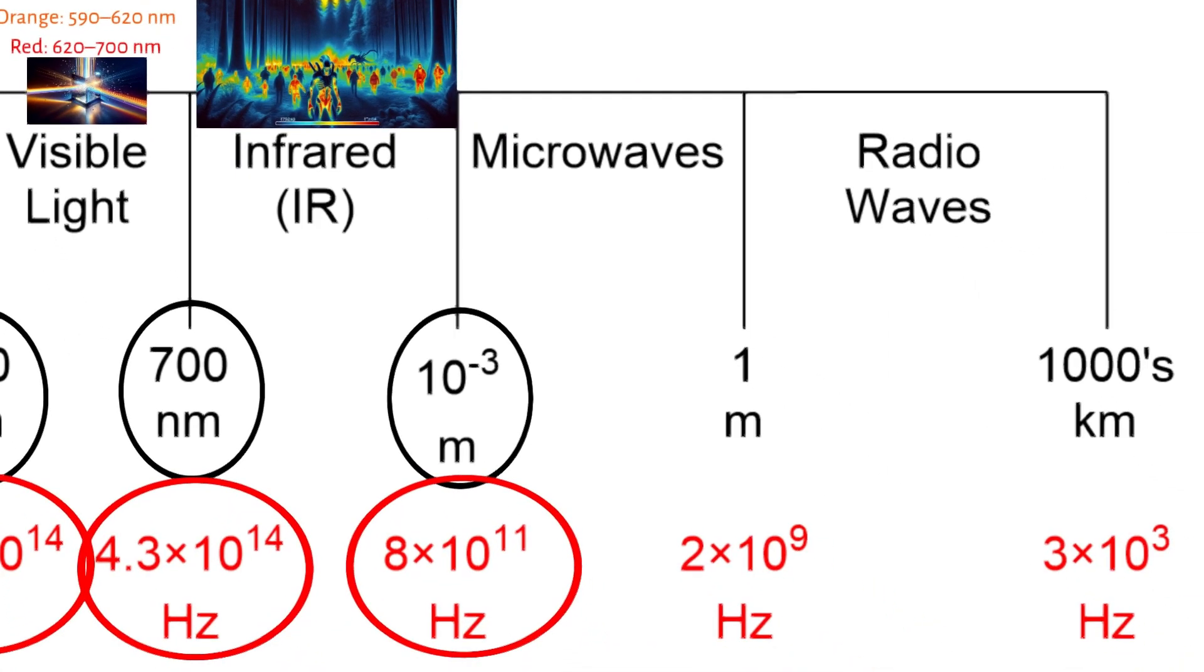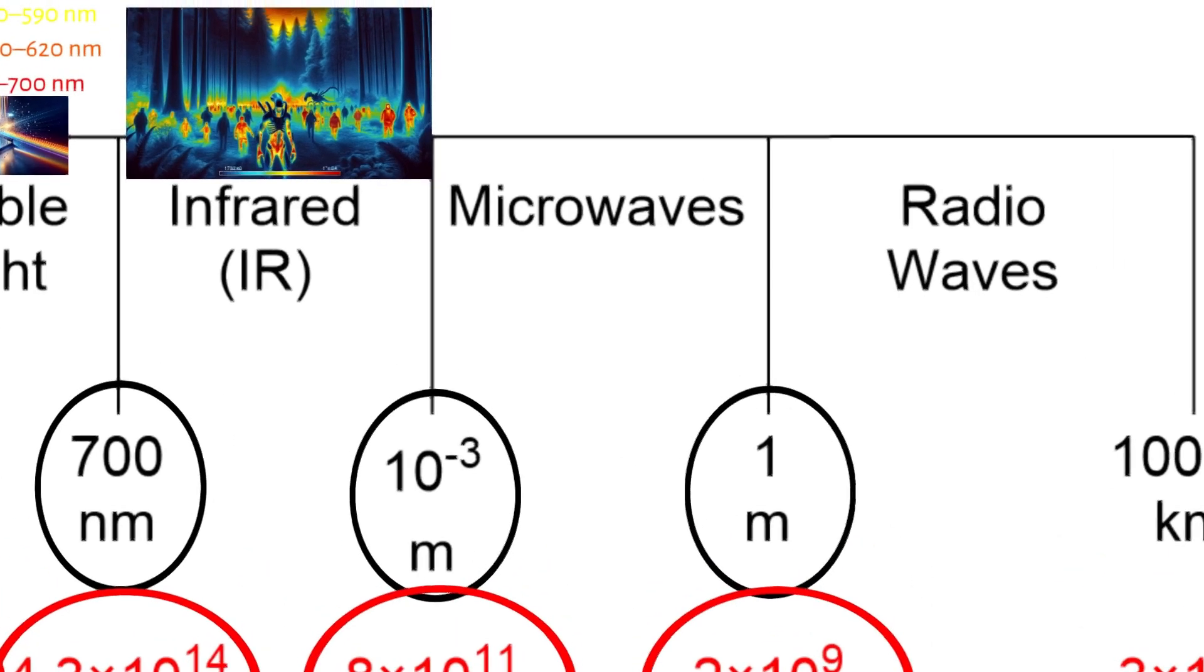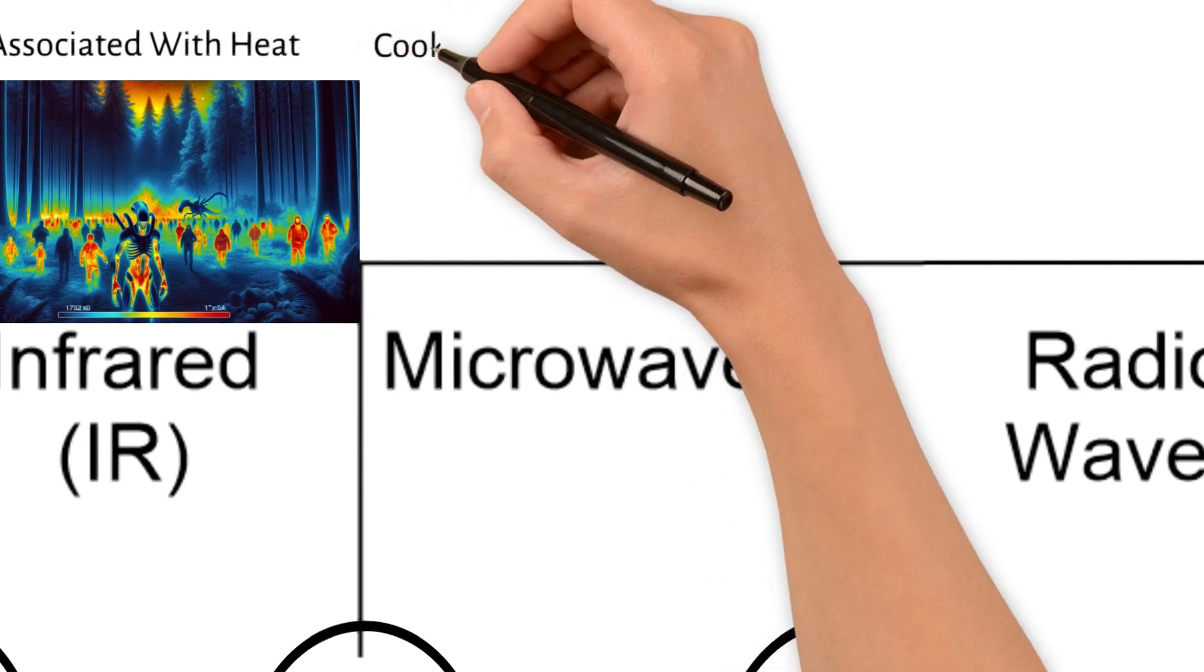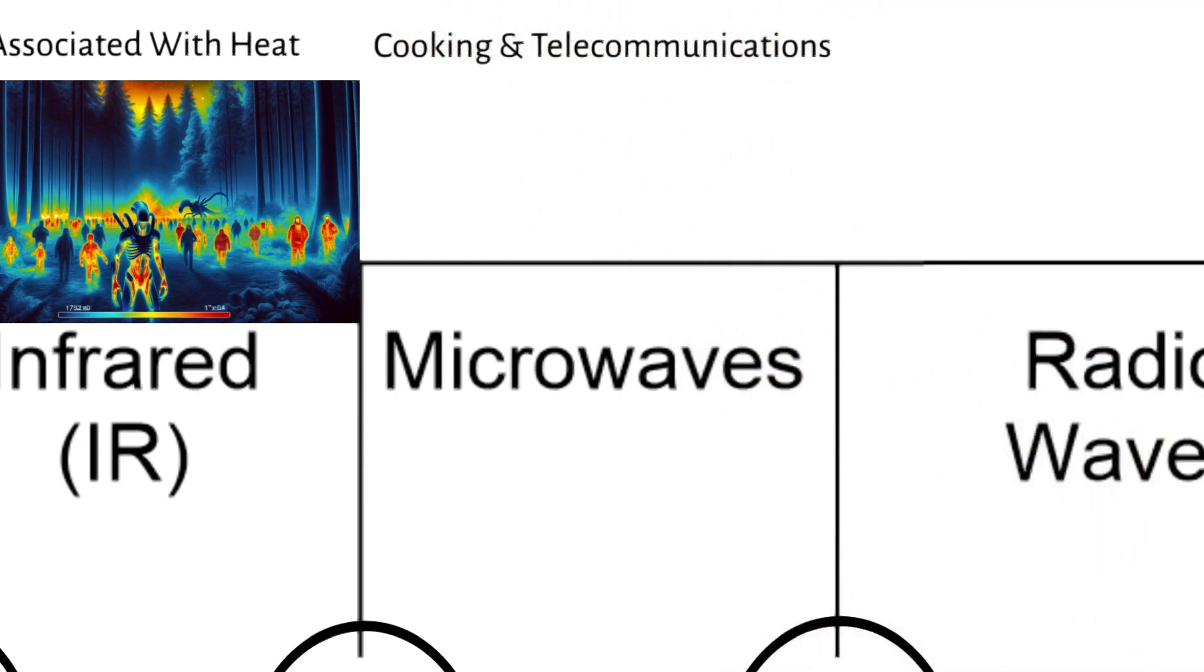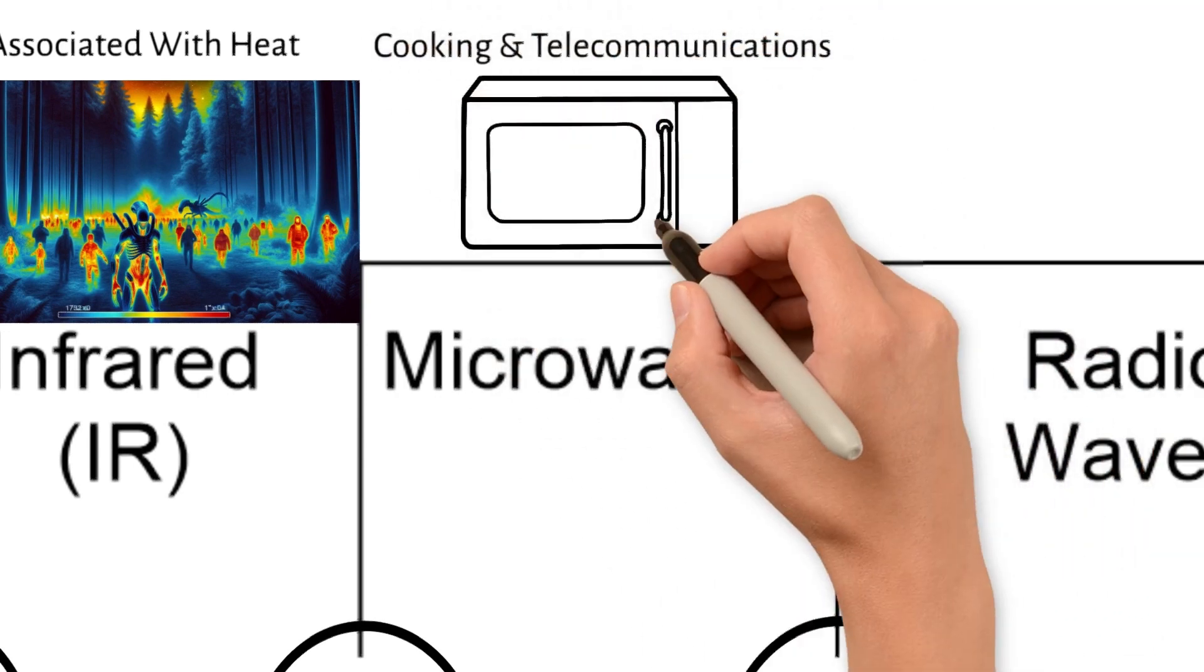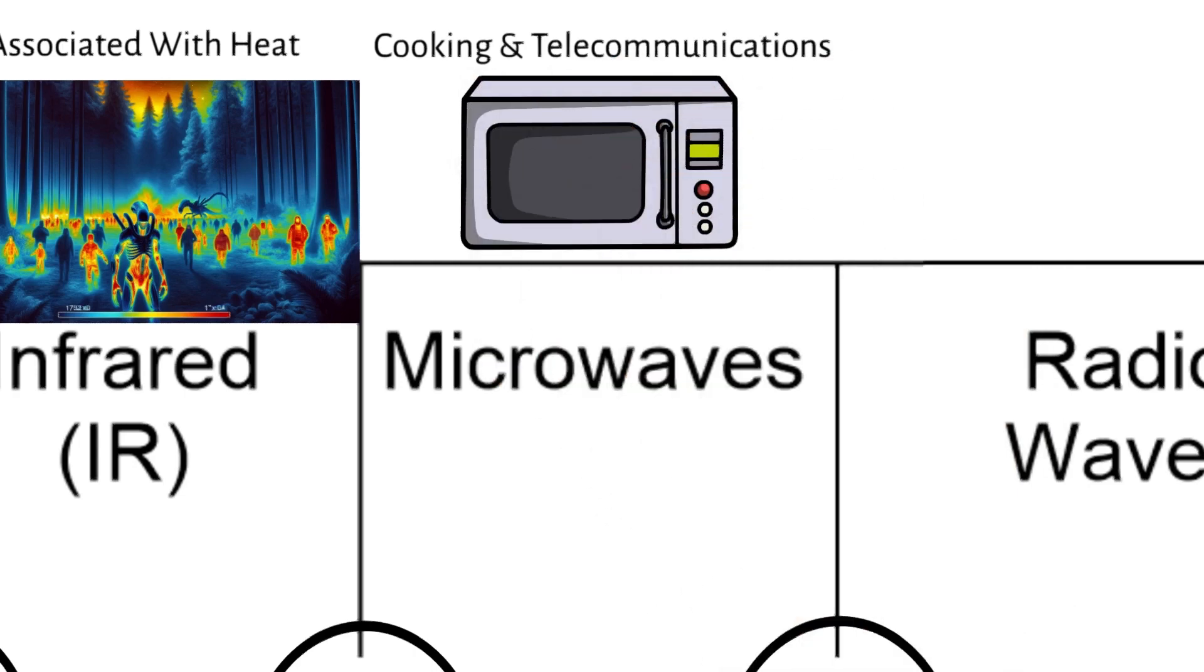Microwaves is next. Microwaves cover wavelengths from about 1 millimeter to 1 meter and correspond to frequencies approximately between 2 times 10 to the 9th Hertz and 8 times 10 to the 11th Hertz. They are used for cooking in microwave ovens, radar, and in telecommunications because they can penetrate atmospheric conditions like rain and clouds better than higher frequency signals.